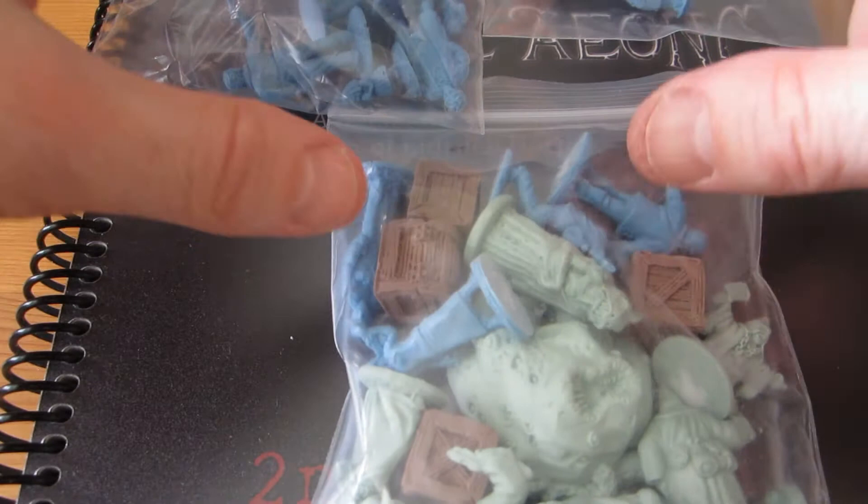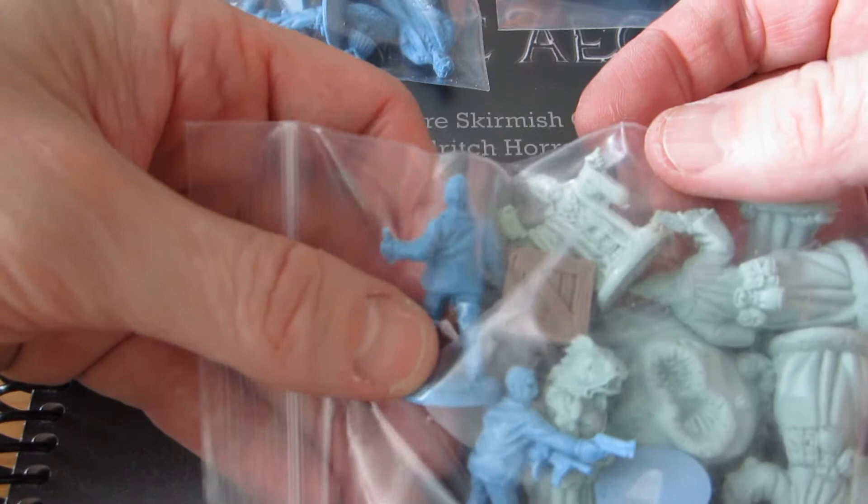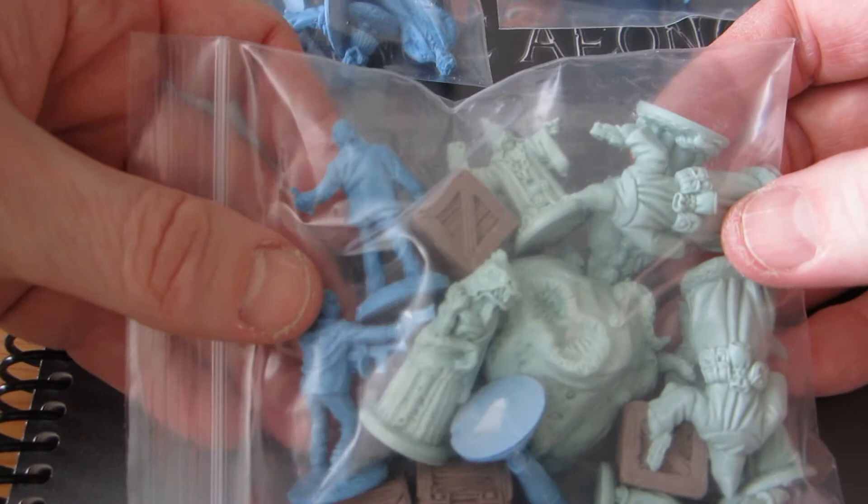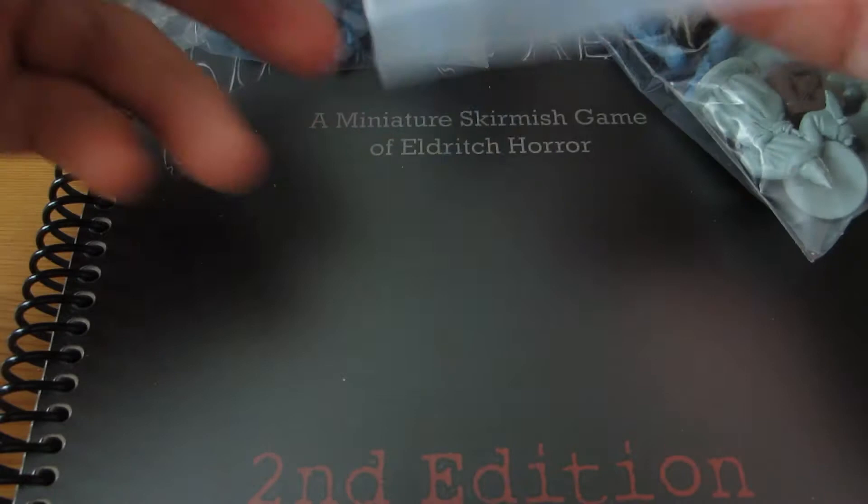I pledged for the rulebook and two packs of minis. This is the base set, the core set, which contains a bunch of threshold agents who are the good guys, some cultists who are bad guys, they belong to the lurker faction, and some objective markers, these loot crates. These were the bonus minis produced just for the Kickstarter, which is one bad guy, one good guy, and some pumpkins. And I also got a plastic booster set with more agents.